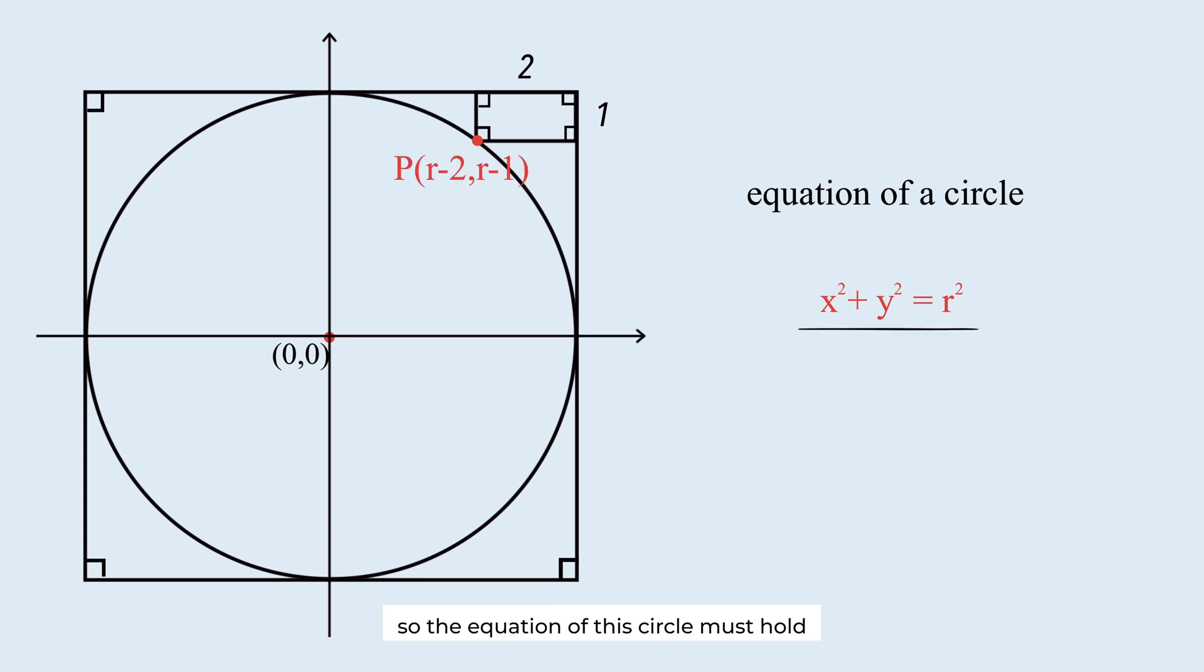So, the equation of this circle must hold for this value. Substitute r minus 2 for x and r minus 1 for y. This is the same equation we saw in the first method. The radius is 5.